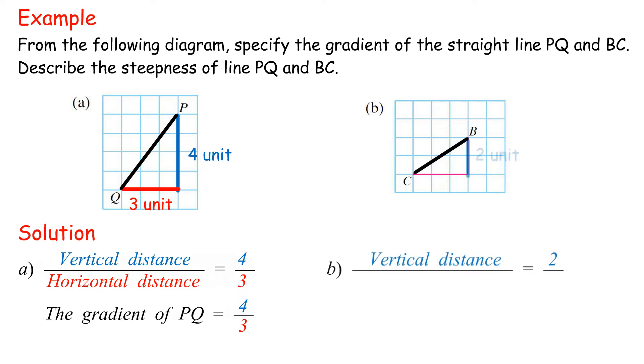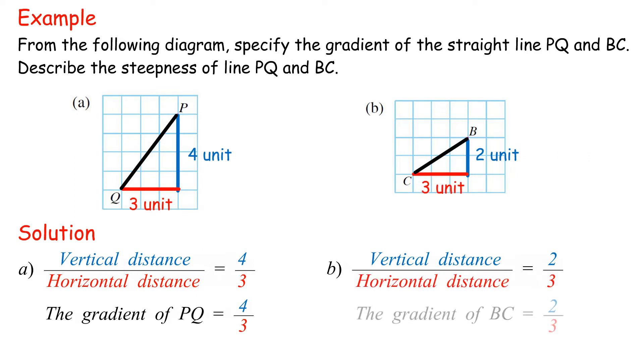B: Vertical distance is 2 units. Horizontal distance is 3 units. The gradient of BC is 2 thirds.